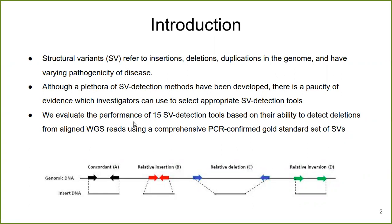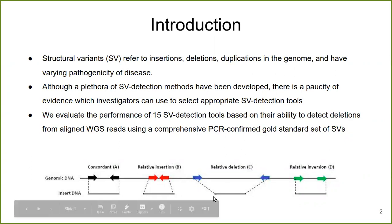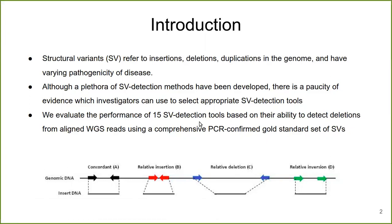In our study, we run 15 different SV callers on our dataset, and then we compare the deletions detected by each of the SV callers with the deletions present in a gold standard dataset, which is basically a comprehensive PCR-verified dataset in which the exact start and end positions of the deletions are known, and then we evaluate which tools have a good balance of precision and sensitivity.